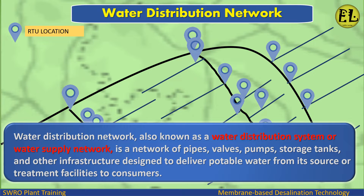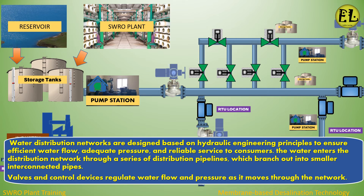A Water Distribution Network, also known as a Water Distribution System or Water Supply Network, is a network of pipes, valves, pumps, storage tanks, and other infrastructure designed to deliver potable water from its source or treatment facilities to consumers. These networks are designed based on hydraulic engineering principles to ensure efficient water flow, adequate pressure, and reliable service. Water enters the distribution network through distribution pipelines, which branch out into smaller interconnected pipes.